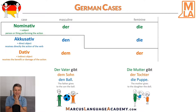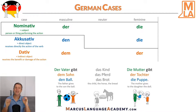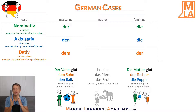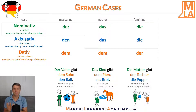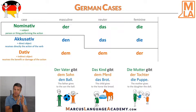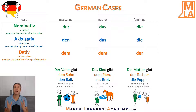German also has the neuter article 'das'. For example: das Kind, das Pferd, und das Brot. Das Kind gibt dem Pferd das Brot — the child gives to the horse the bread. There is no change in the article in the nominative and accusative case; it remains 'das'. But in the dative case, the article 'das' becomes 'dem'.